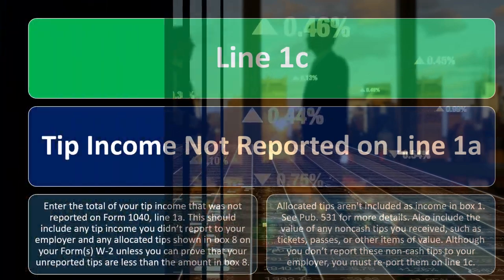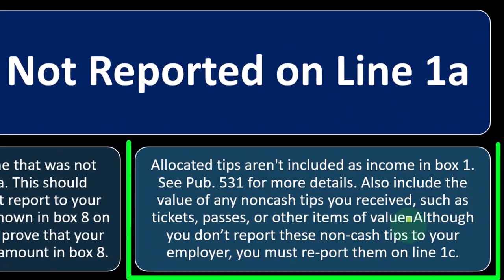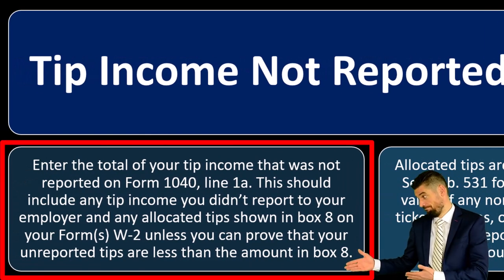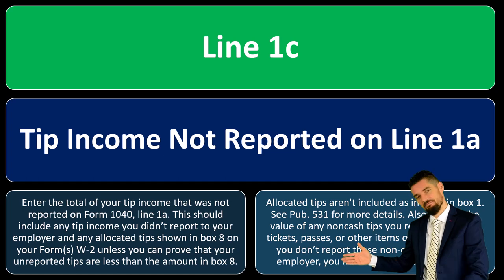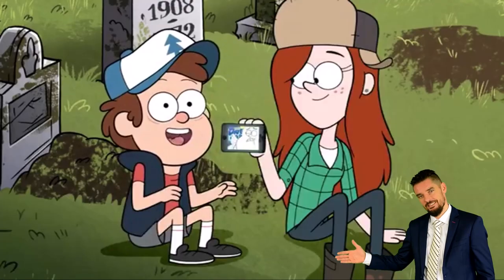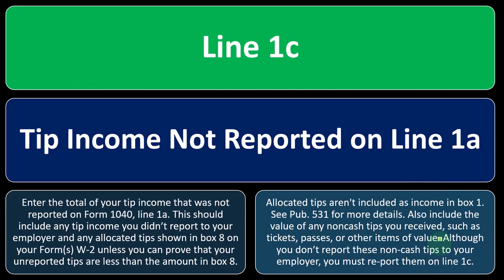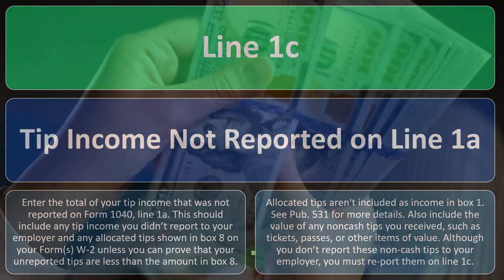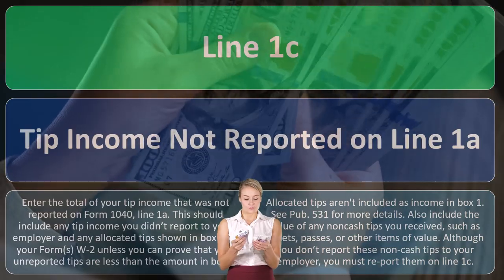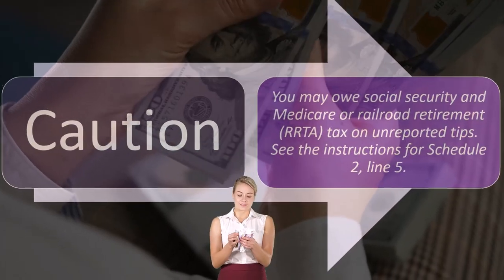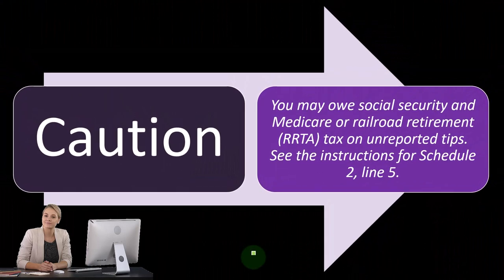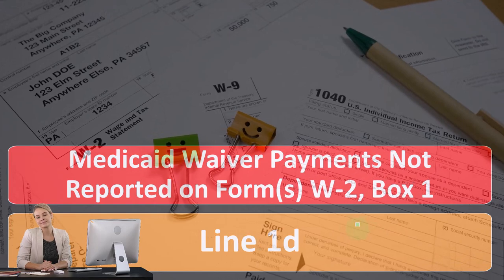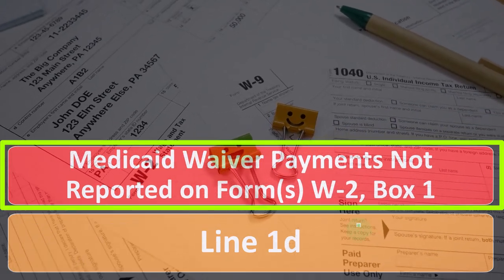Tips represent value given directly for work done, which is hard for the IRS to track. Even if the tip was in the form of something else — like tickets to a concert — you should report it as income. Although you don't report non-cash tips to your employer, you must report them on Line 1c. Caution: you may owe social security and Medicare or railroad retirement tax (RRTA) on unreported tips — see the instructions for Schedule 2, Line 5.